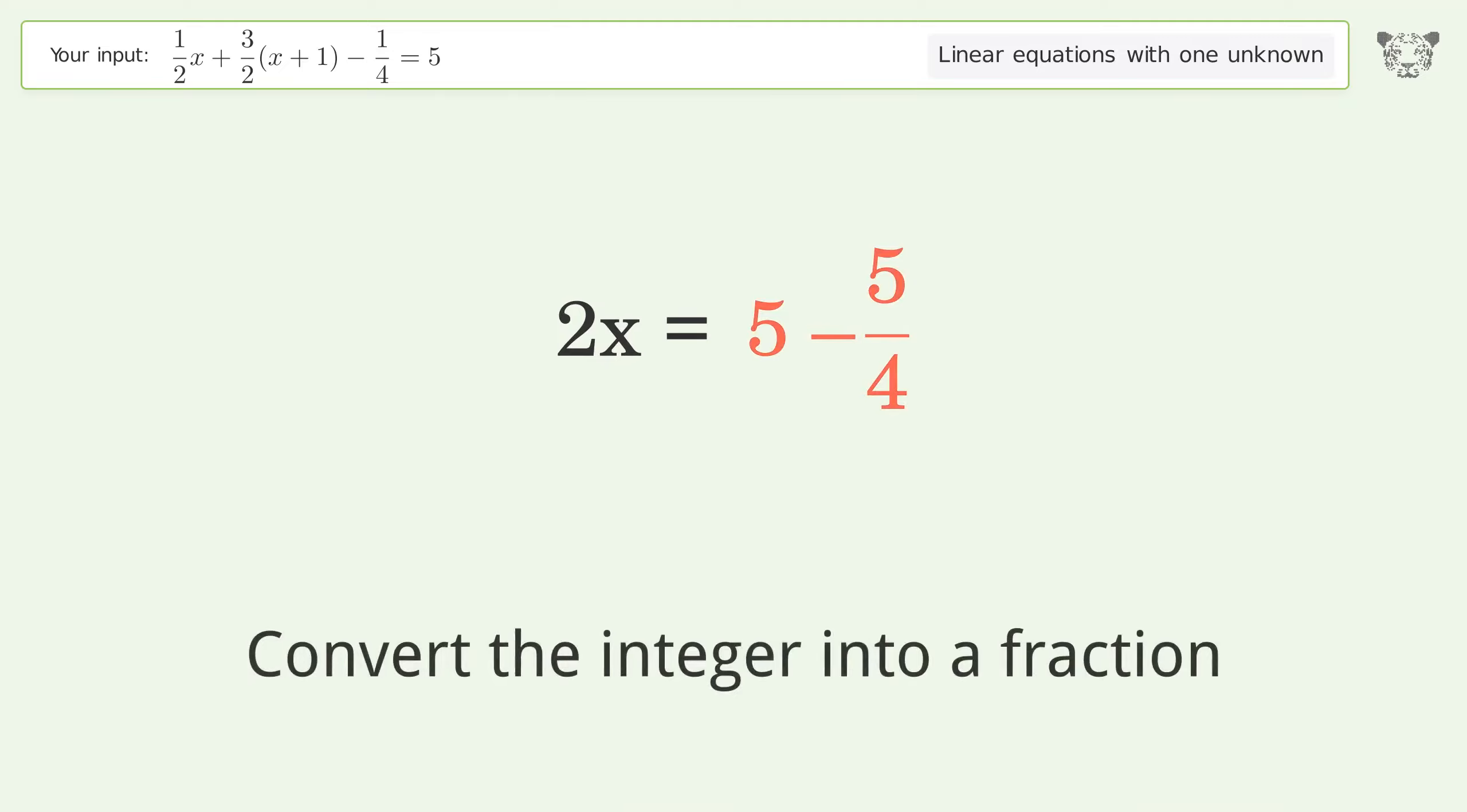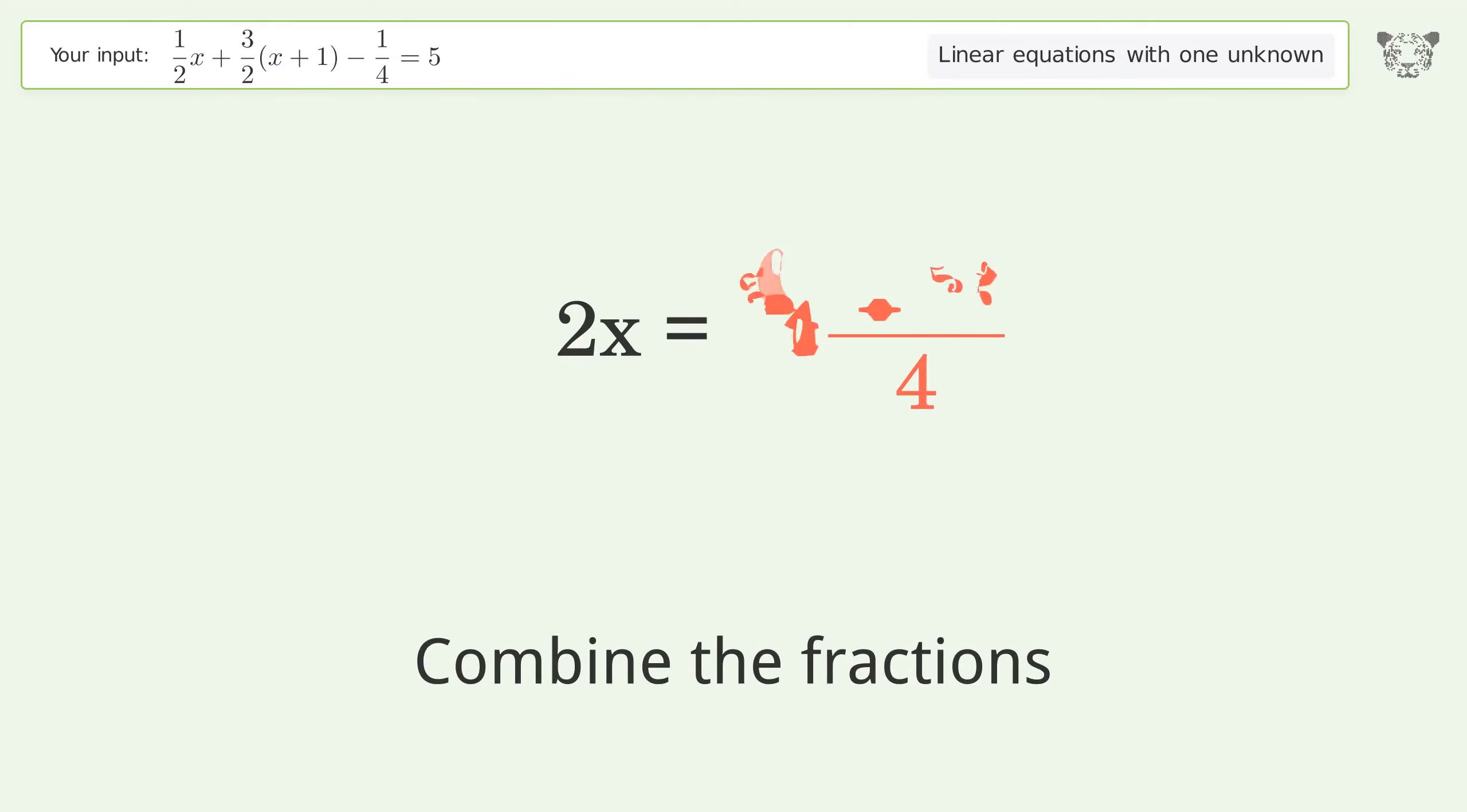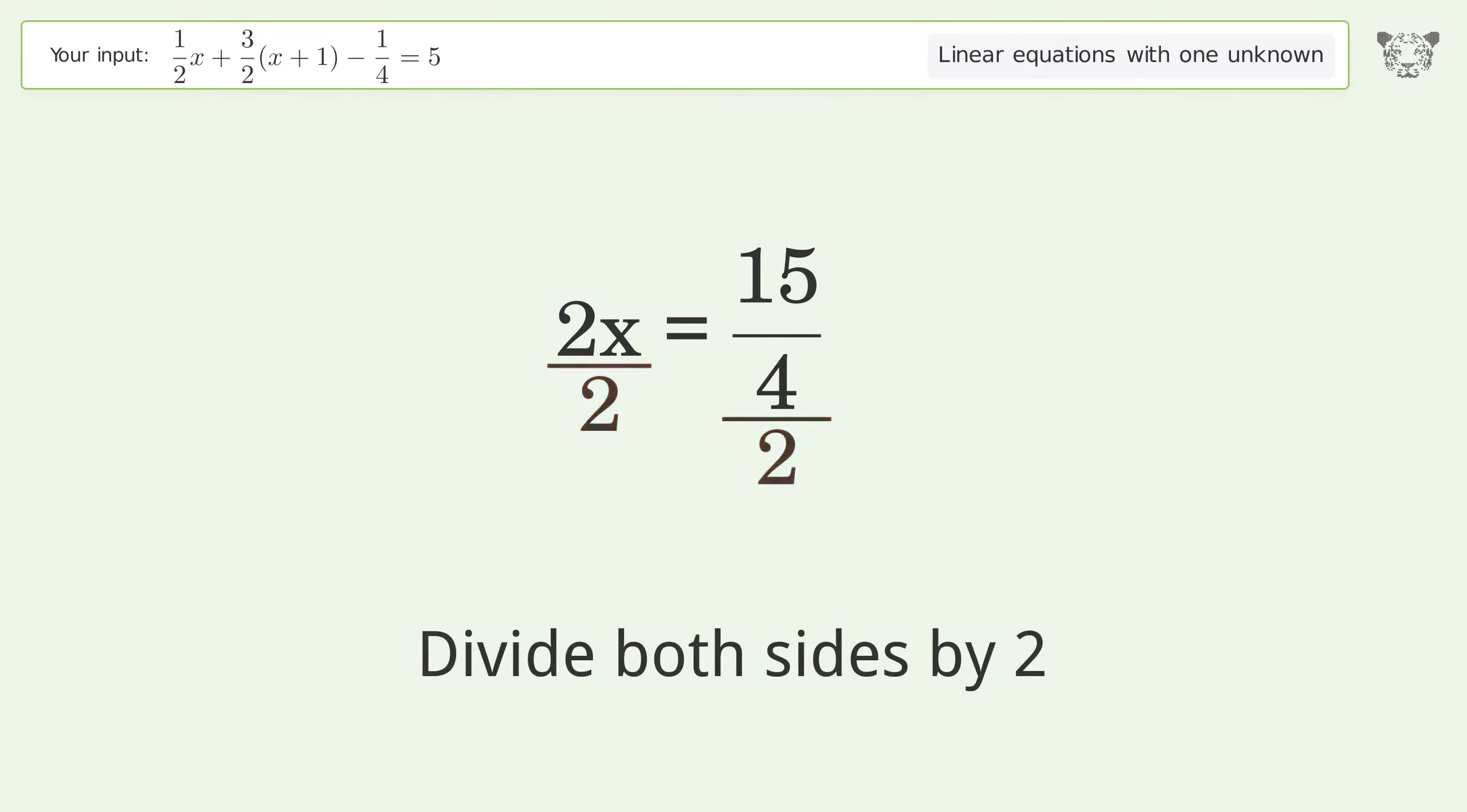Convert the integer into a fraction. Combine the fractions. Combine the numerators. Isolate the x. Divide both sides by 2. Simplify the fraction. Simplify the arithmetic.